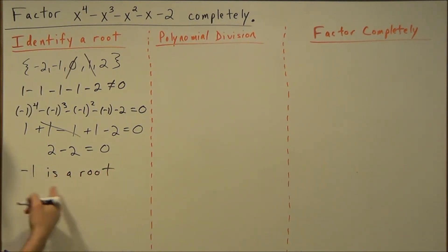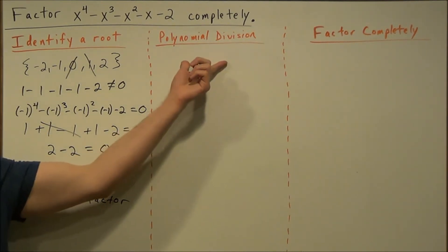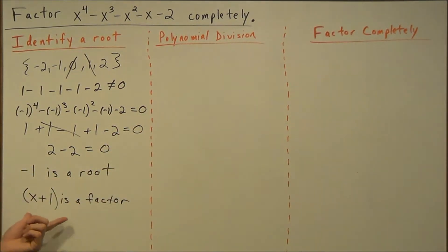And what this tells us, if negative 1 is a root, then x plus 1 is a factor. And this is a huge step because once we identify a factor we can move to step 2, polynomial division. How do we know that we can move from here to here? Well, if we have something like x plus 1 equals 0, when we solve it, it gives us x equals negative 1. So we're kind of just moving backwards here and flipping the sign.